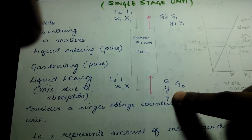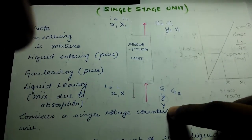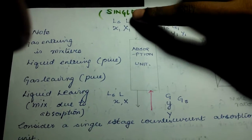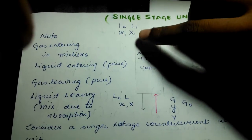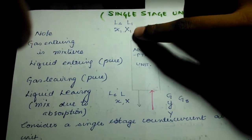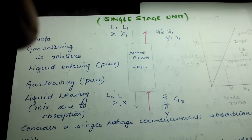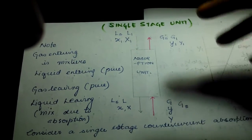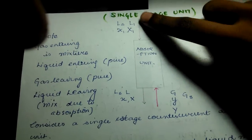The liquid I'm sending in is water with mole fraction x. The amount of water is L1, and capital X is the mole ratio. LS is the fraction of water which doesn't react at all. The reason I'm using GS and LS is because they remain constant throughout the process.